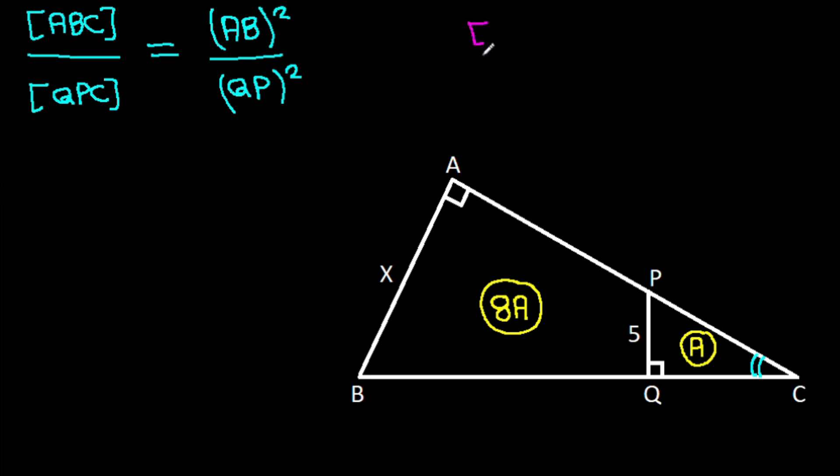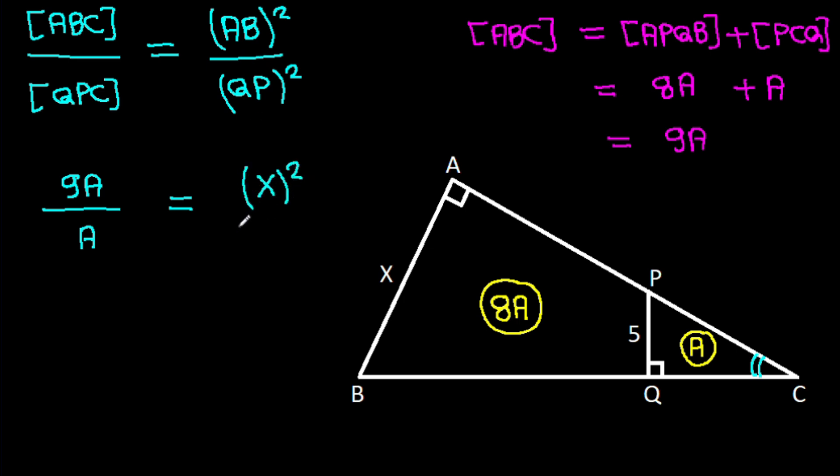Now, area of ABC will be area of APQB plus area of QPC. So area of ABC is 9A over area of QPC is A. It is equal to AB is X squared over QP is 5 squared.